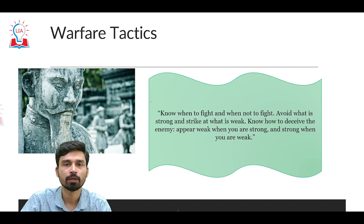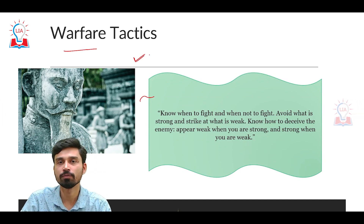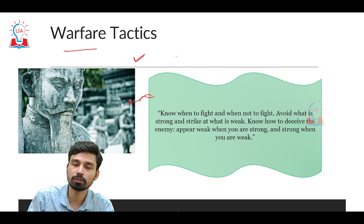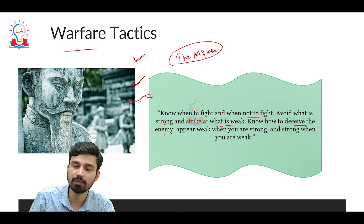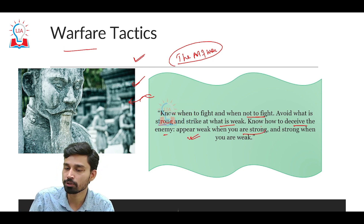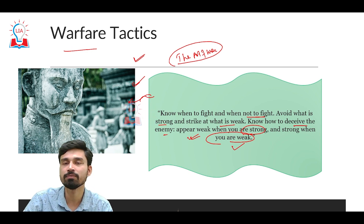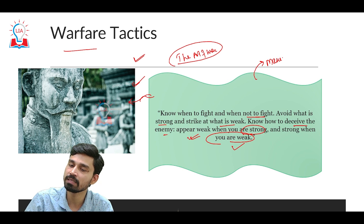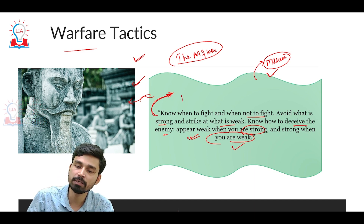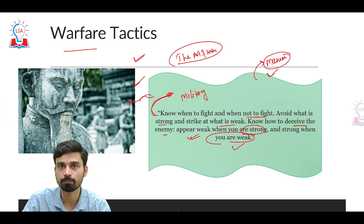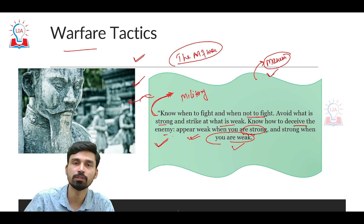The warfare tactics of guerrillas can be traced back again to Sun Tzu's Art of War, written in the 6th century BC. Sun Tzu says: know when to fight and when not to fight; avoid what is strong and strike at what is weak; know how to deceive the enemy. Importantly, he says: appear weak when you are strong, and strong when you are weak. This is considered the basic maxim of guerrilla warfare, and interestingly this strategy is not outdated — even modern Chinese military strategy and strategic deception can be traced back to Sun Tzu's Art of War.